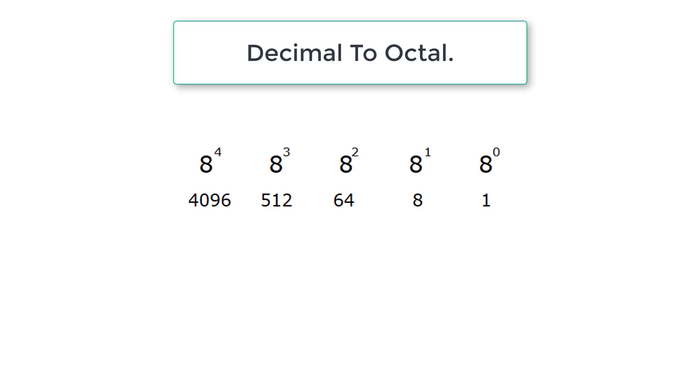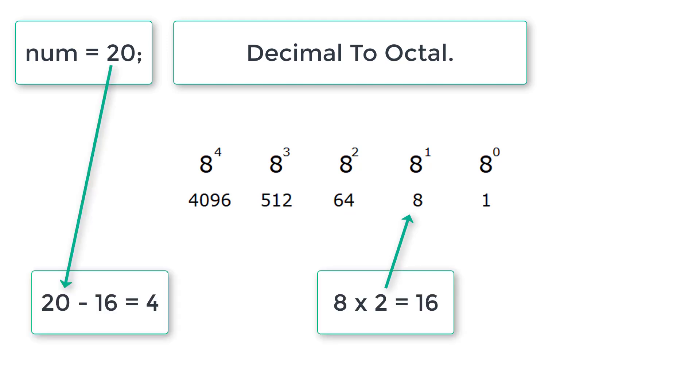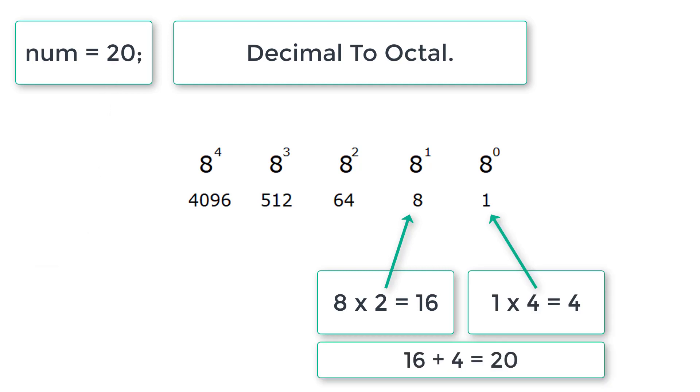If user enters decimal number 20, we check that number against each number here which is less than 64. Let's get back one step. So 20 is greater than 8. So 8 times 2 is 16. So 20 minus 16 is 4. 4 is remaining. So 1 times 4 is 4. So 16 plus 4 is 20, which is the user entered number in decimal system.